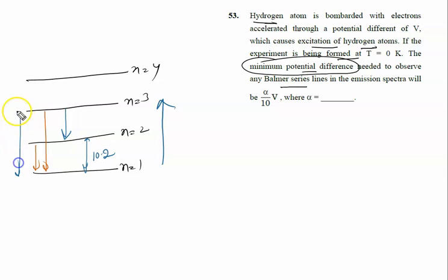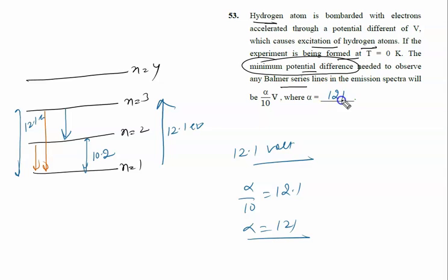And between 1 and 3 is 12.1 electron volts. So here, energy required is 12.1 electron volts, so voltage or potential difference will be 12.1 volts. Now, this alpha upon 10 volts is 12.1 volts, so alpha is 12.1 into 10, that is 121. The value of alpha is 121. The right answer of this problem is 121.